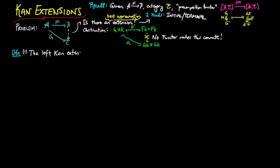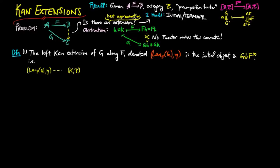One, the left Kan extension of G along F, denoted Lan_F G eta, is the initial object in the category G over F upper star. In other words, given an object K gamma in G over F upper star, there is a unique morphism alpha from the left Kan extension to it.